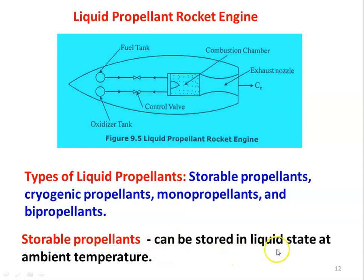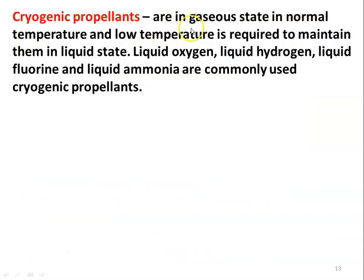Storable propellants can be stored in the liquid state at ambient temperature. Cryogenic propellants are in the gaseous state at normal temperature; low temperature is required to maintain them in the liquid state. Liquid oxygen, liquid hydrogen, liquid fluorine, and liquid ammonia are commonly used cryogenic propellants. By maintaining them in the liquid state, we can carry more quantity of propellant with the rocket.